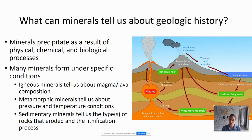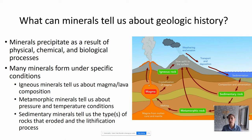Minerals can tell us a lot about the geologic history of a planet. Minerals precipitate as a result of physical, chemical, and biological processes, and many minerals form under fairly specific conditions. So when we find them in a rock, we can use them to tell us a lot about that rock's geologic history. Igneous minerals tell us about the composition of magma or lava. Metamorphic minerals tell us about pressure and temperature conditions. And minerals in sedimentary environments tell us about the types of rocks that eroded to create those sediments and the lithification process.